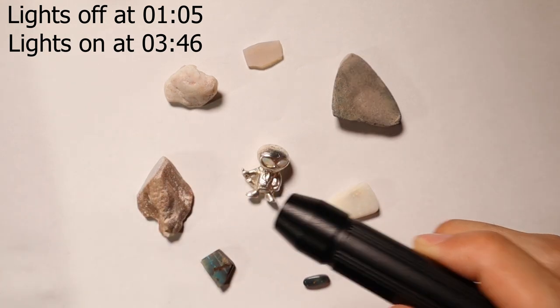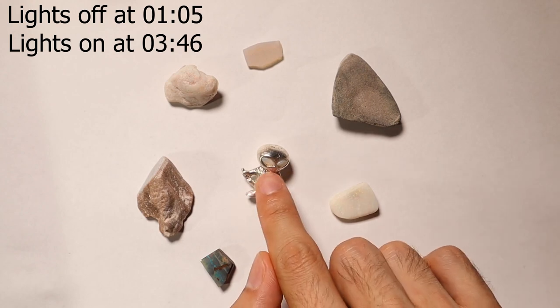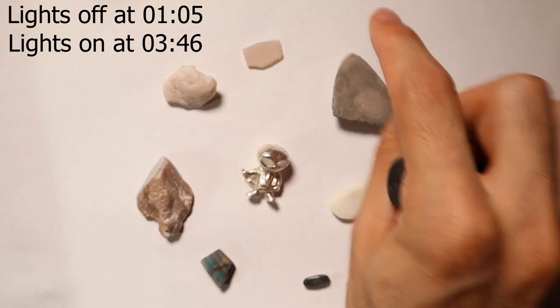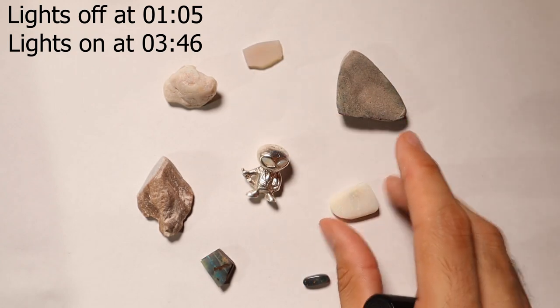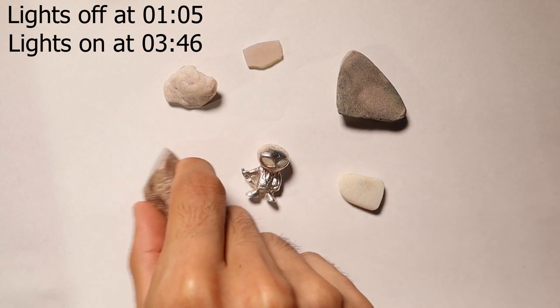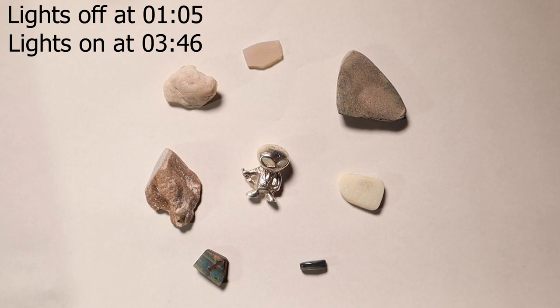I've got American opal here, I've got a Coober Pedy Shell, Coober Pedy Crystal, some Andamooka Matrix, Mintabie, Lightning Ridge Black, Boulder, and some Painted Lady from Andamooka. So I'll just turn off the lights quickly now and let's see what we find.